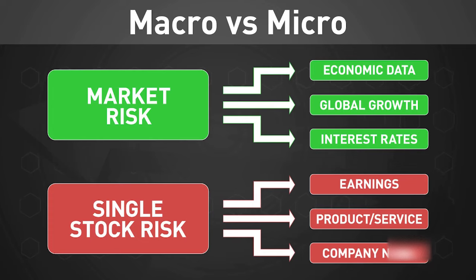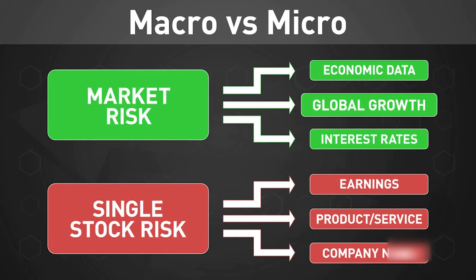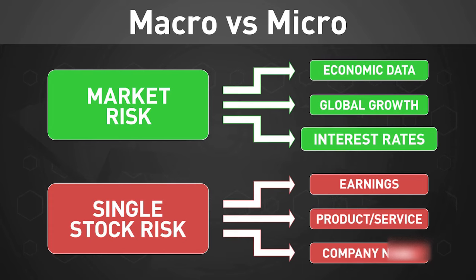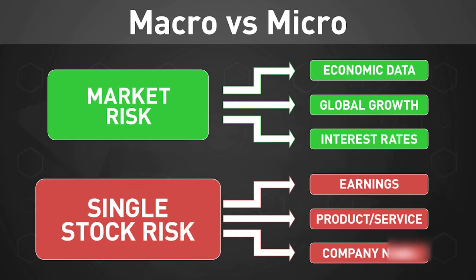Some common examples of market risk would be economic data, global growth or lack thereof, or interest rates. Obviously these can have varying impacts and hit some indexes more significantly than others, but the key idea is that these risks are spread over the different stocks that make up the index.